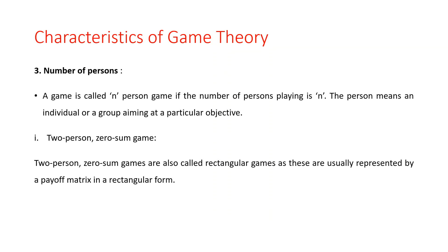The third characteristic is the number of persons. A game is called an n-person game if the number of persons playing is n. The person means an individual or a group aiming at a particular objective. In the number of persons problem, we have the two-person zero-sum game as an example of this characteristic.